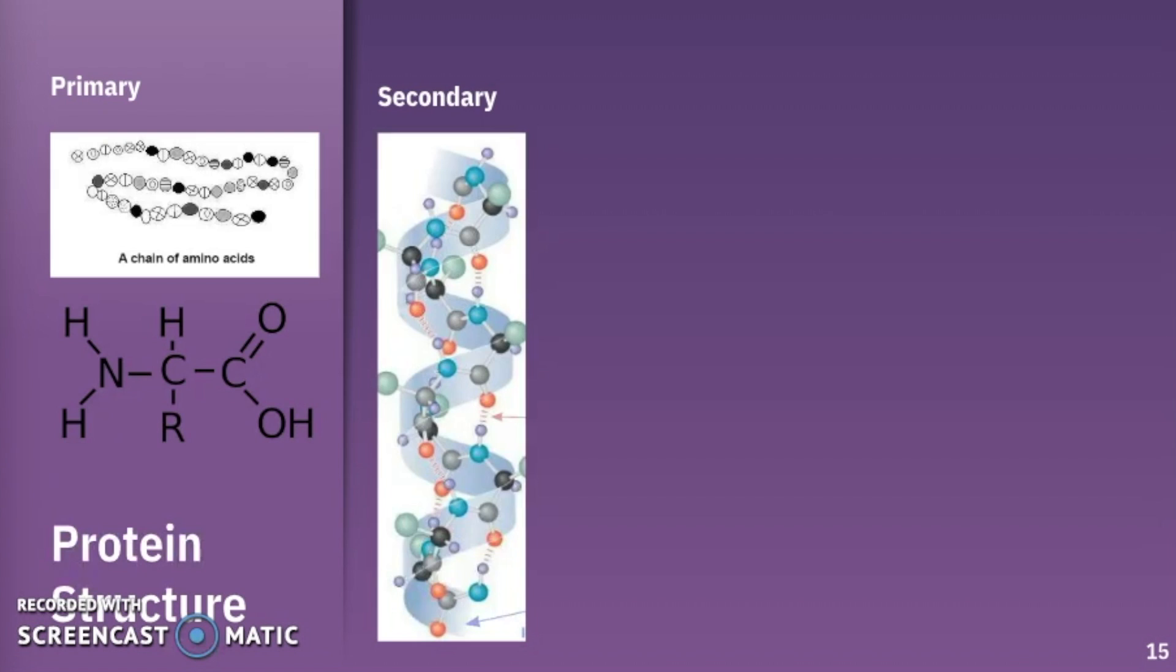When we get to our secondary structure, we have these things called alpha helices and beta pleated sheets. And these are the two main secondary structures in a protein. And this is when we have hydrogen bonds between these amino acids allowing these chains to twist together or to fold together in certain ways.